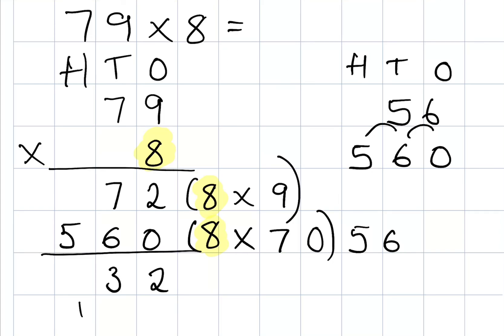Now I move over to my hundreds column. I've got nothing here and I've got 500, but I've got this 100 down the bottom that I can't forget. So 500 add 100 gives me 600. I'm going to cross that off so I know that I've added it on. So the answer to 79 times 8 is 632.